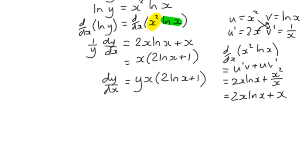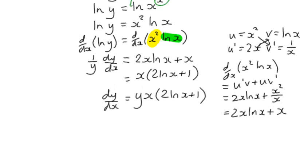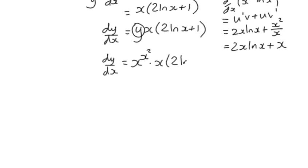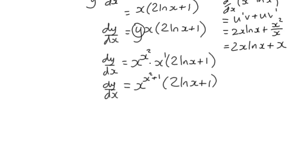In order to express it in terms of x, we need to substitute y for its original value, which was x to the power x squared. So we finish off by substituting: dy/dx equals, instead of y, x to the power x squared, multiplied by x times (2 log x + 1). We've got two x terms multiplying, so we can add the exponents: x to the power x squared plus 1, multiplied by (2 log x + 1). That's probably the best way to finish it off.